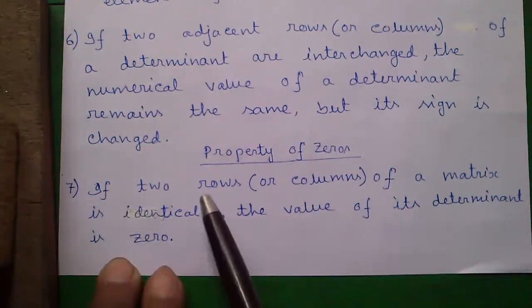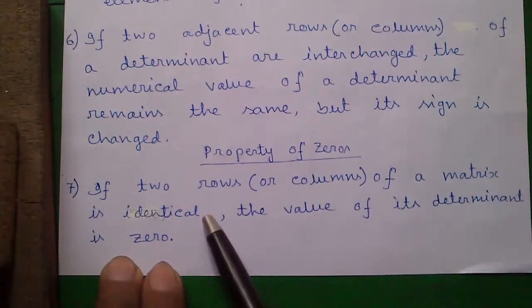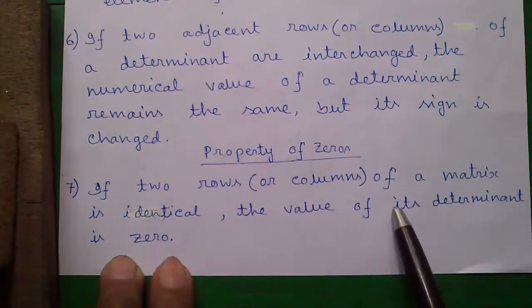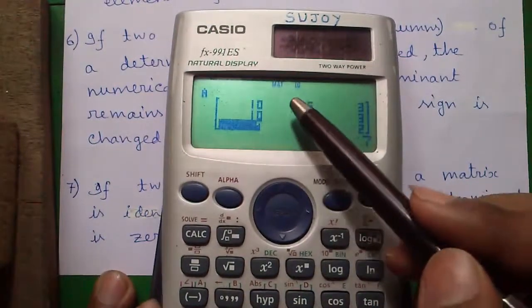Next we will discuss about the property of zeros. So our seventh property: if two rows or columns of a matrix is identical, the value of its determinant is 0.